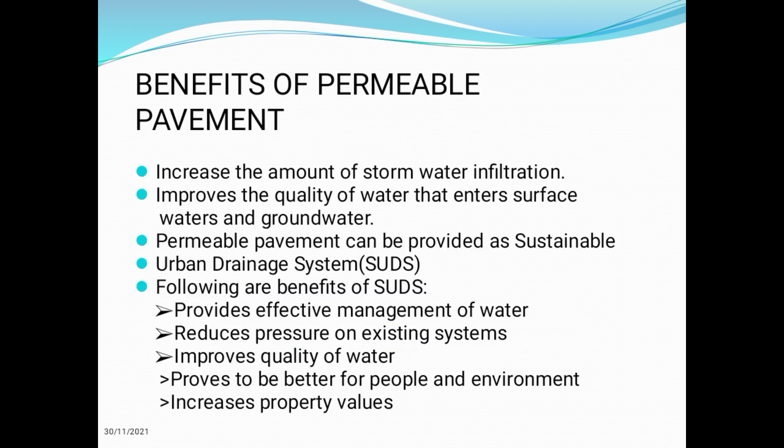These are the benefits of permeable pavement. It increases the amount of storm water infiltration. It improves the quality of water that enters surface waters and groundwater. Permeable pavement can be provided as sustainable urban drainage systems (SUDs). SUDs is a collection of water management practices that aim to align modern drainage systems with natural water processes.